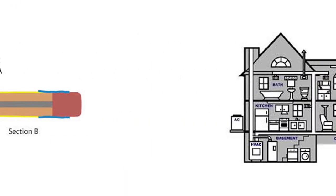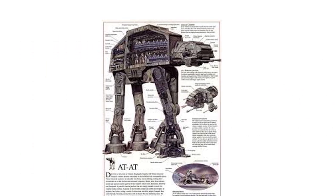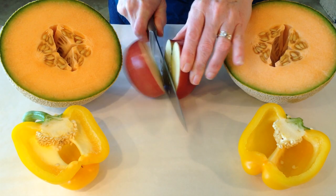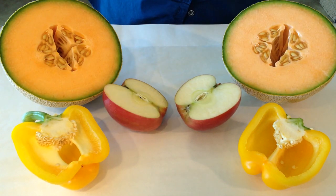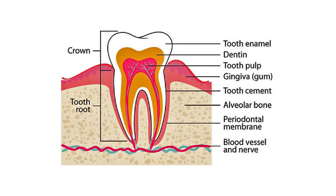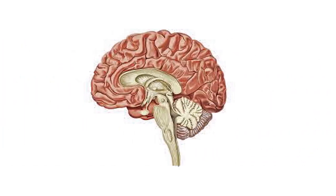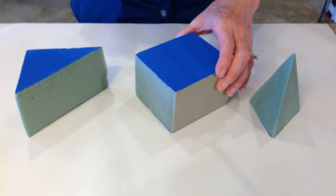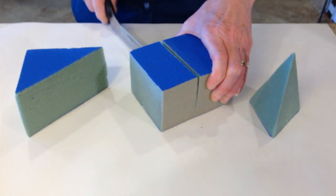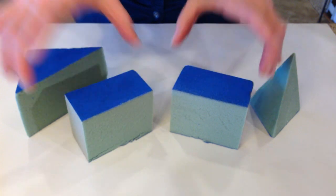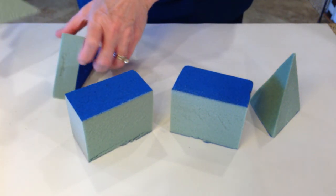A slice is just a cross-section of a three-dimensional figure. Lots of things can be sliced open to reveal what is inside. Cross-sections are pretty common in science class, but what do they mean in math? Well, in math, a slice is the two-dimensional shape that is produced when a three-dimensional figure is cut, like this.